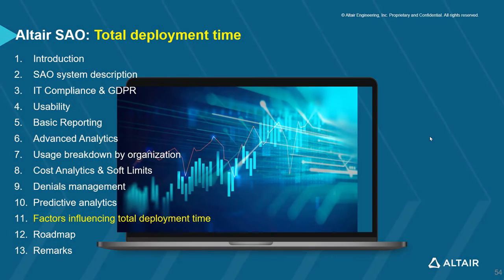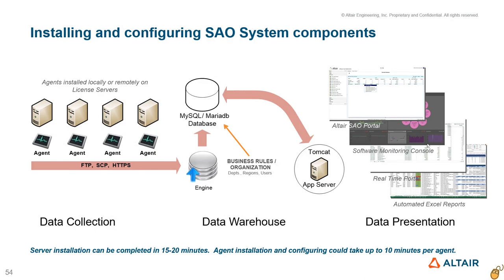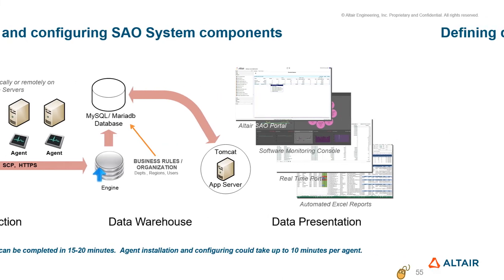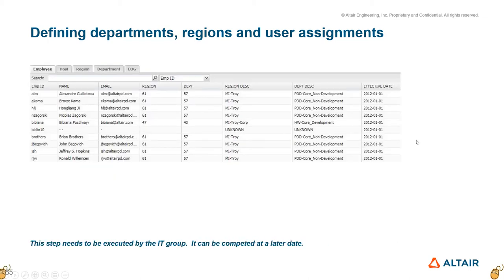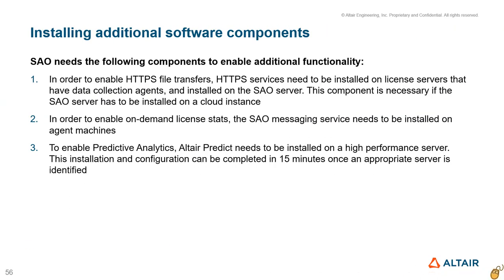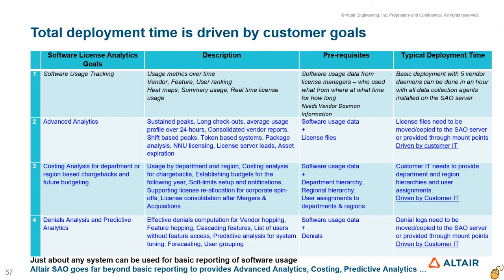A typical server installation and configuration can be completed in 15 to 20 minutes. An agent can be installed and configured in about 10 minutes. Time taken to define departmental and regional hierarchies is driven by the IT group; however, this functionality is not necessary for basic operation and can be added any time after the basic system goes online. HTTPS transport, SAO messaging system, and predictive analytics can be installed and configured in less than an hour and rolled out incrementally. The simplest implementation can be rolled out in an hour or so.